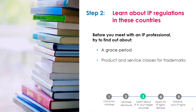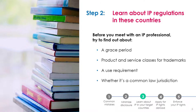Some countries also have more detailed classes for trademark products and services. And some countries don't have any so-called use requirements to file for trademarks, so anyone can file for a trademark. Finally, other countries, including Canada, have common law jurisdictions, which means that someone may have trademark rights they can enforce without first having to register the trademark with the IP office. This means that you won't be able to find all relevant trademarks in a database containing registered trademarks.